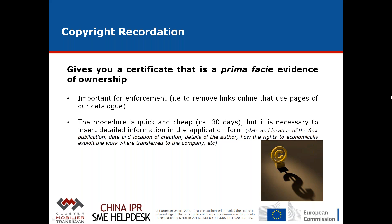The copyright recordation certificate from the Copyright Protection Centre of China is a quick and fairly cheap procedure, but it requires a lot of information: the date and location of first publication, the date and location of creation, details of the authors, and how the rights to economically exploit the work were transferred to the company. This means that when we create a catalog or entrust a photographer to take pictures, it's always very important to keep track of dates, contracts, and everything. All this information — if you have it at hand — makes it very easy to fill in a form.